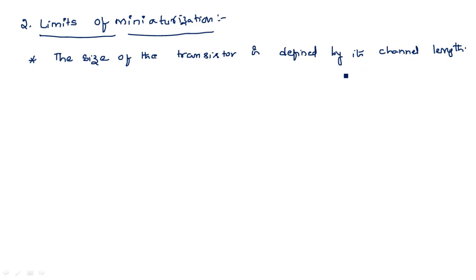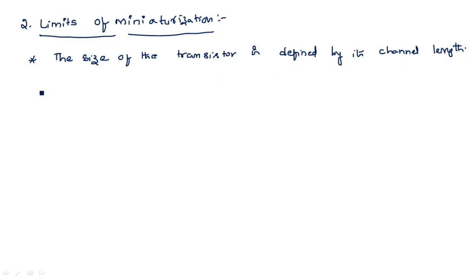When we say 5 micrometer technology, 2 micrometer technology, or 1.2 micrometer technology, those dimensions refer to the channel length L. So 5 micrometer technology means L = 5 micrometers. The technology is named after the channel length, and that is why the size of the transistor is defined by its channel length.